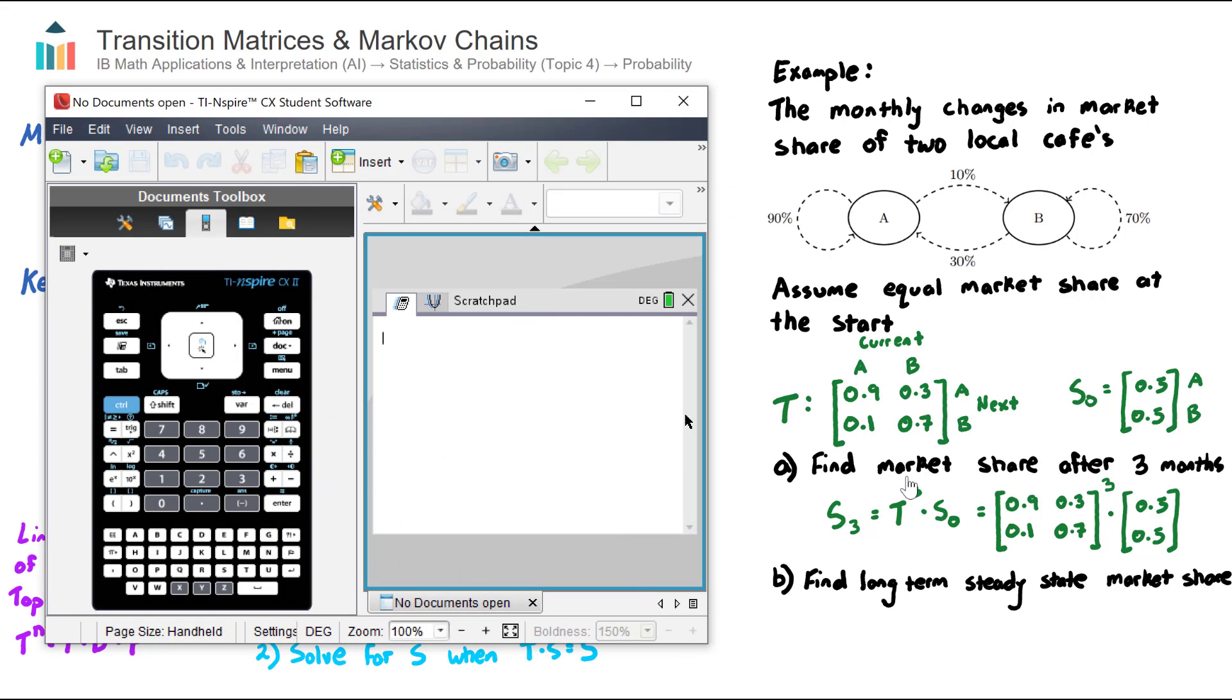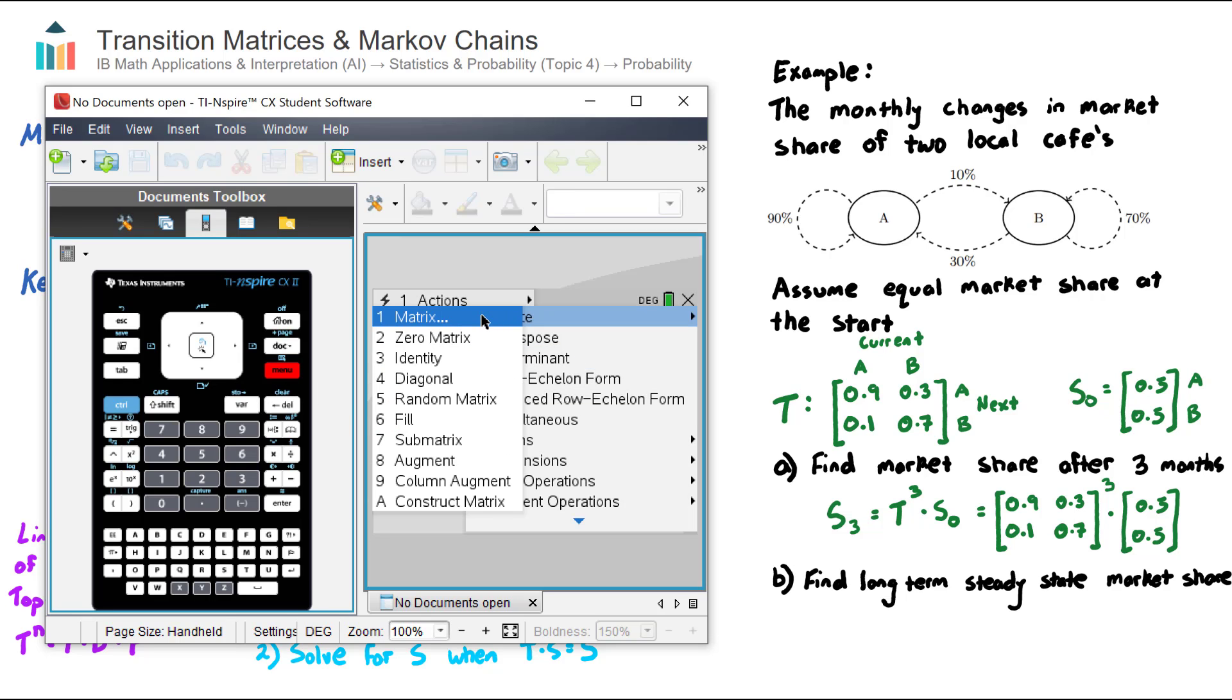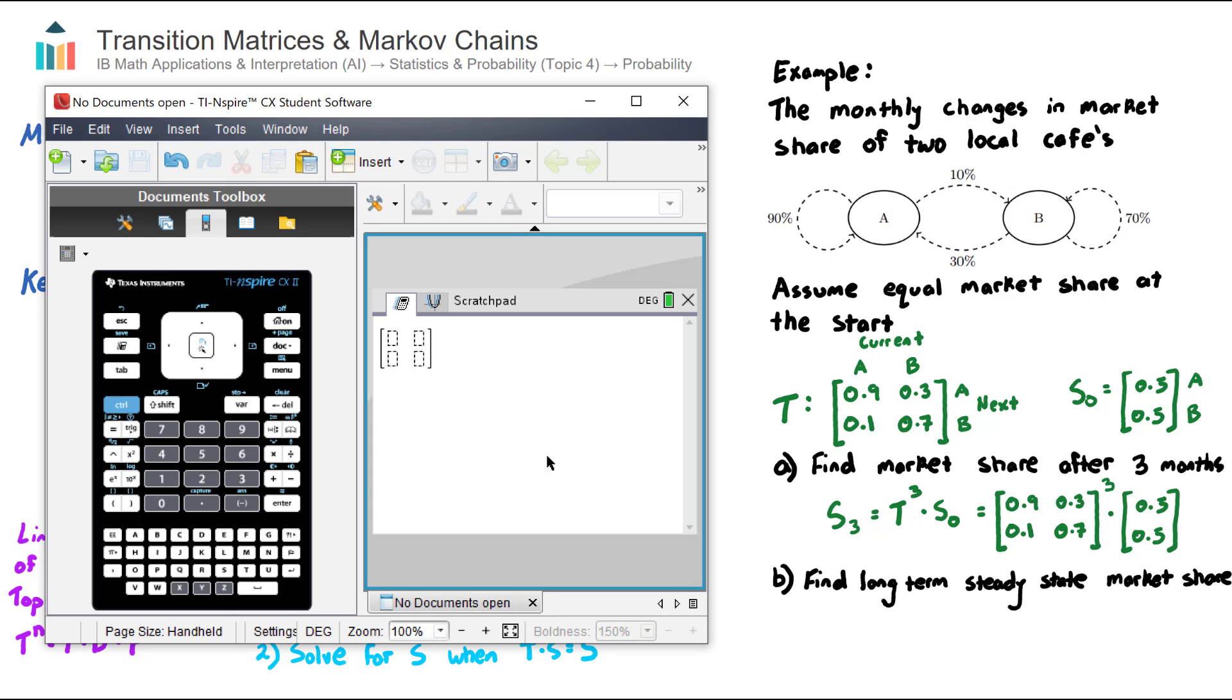We have here the transition matrix T brought down from up above, raised to the power of three, because we're trying to find the state after three intervals, or in our question here, three months, multiplied by the initial state. We can then use our calculator to find out what this is equal to. So we bring the calculator up. Let's go and create a two by two matrix for matrix T. We go menu, matrix and vector, number one, create number one matrix. And this is a two by two. So my values are 0.9, 0.3, 0.1, and 0.7. I like to store this in my calculator as a letter so that I can use it for later question parts. So go control, store, and I'm going to store that as letter T. So my calculator now remembers my T button as that matrix.